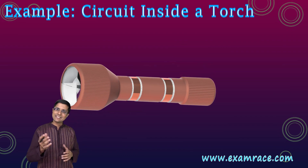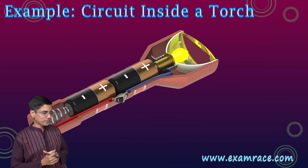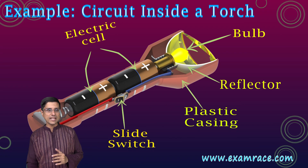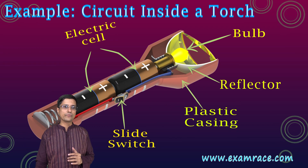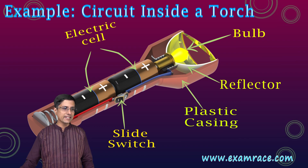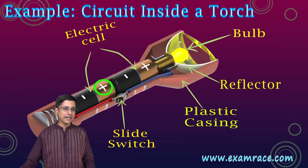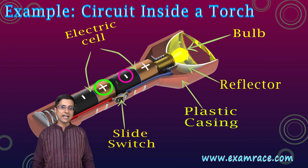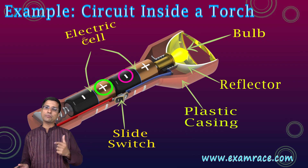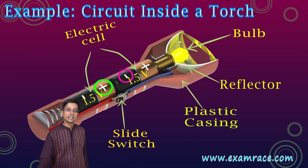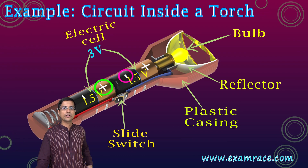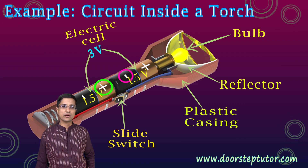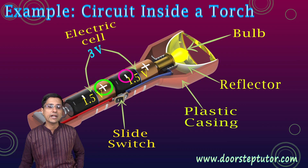One of the very common examples, also given in your book, is a torch circuit. The two electrical cells inside this torch are connected in series — one after the other — and their respective potentials are added. So if one is 1.5 volts and the other is 1.5 volts, we have a total of 3.0 volts available across their combined terminals.